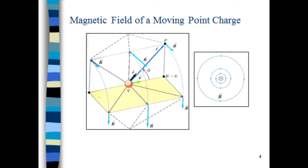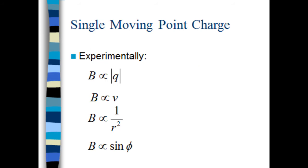In order to formulate the Biot-Savart Law, we're going to start out with just an individual point charge moving with velocity v as shown to the right. We want to ask ourselves what magnetic field is generated at the point P shown on the upper right due to this moving charge. We define the radial direction r-hat, the distance r between point P and our charge, and the angle phi between the r-hat vector and the velocity vector.